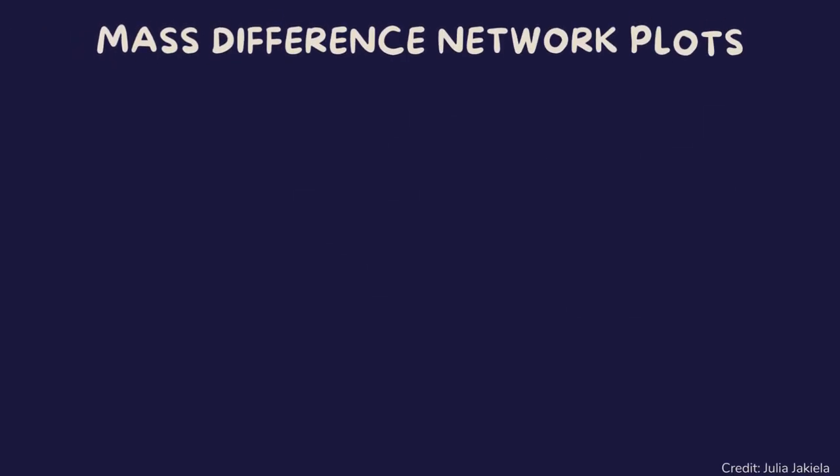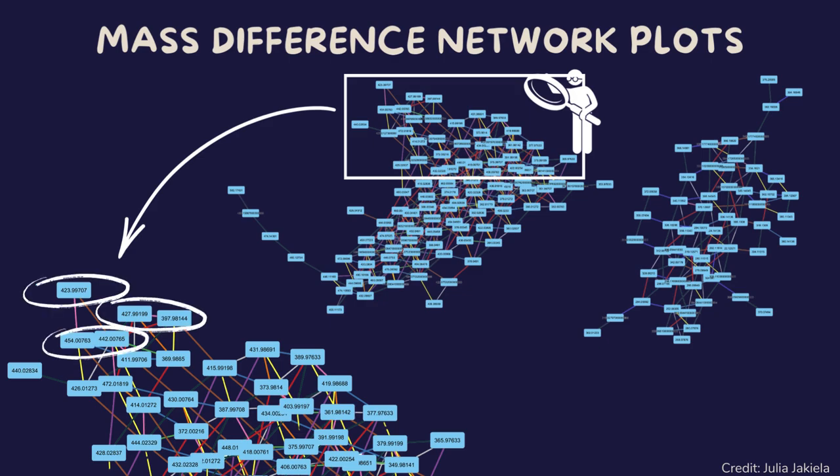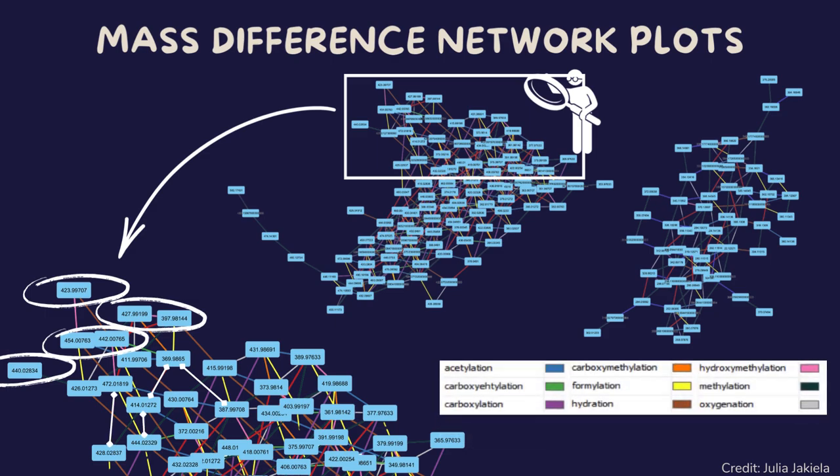Mass difference network plots are graphical representations where the nodes represent individual mass spectral peaks corresponding to molecular ions, and edges represent specific mass differences between these peaks. Those plots reveal the relationships between different molecular species based on their mass differences, which in turn correspond to various chemical transformations, such as methylation, carboxylation, hydration, and many more.